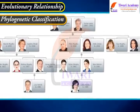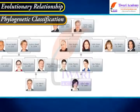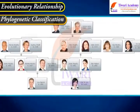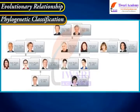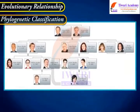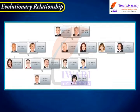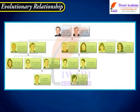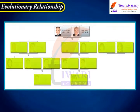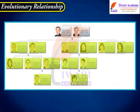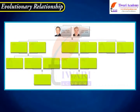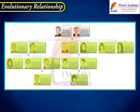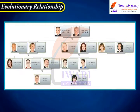The kingdom is the highest taxa while the species is the lowest taxa. Members of a species have a higher number of common characters than members of a kingdom.